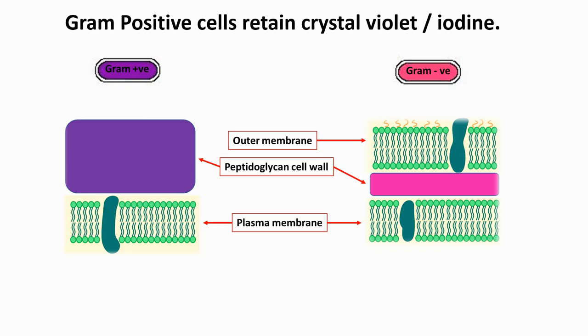The decolorized gram negative cells are counter-stained with carbol fuchsin. This is why gram positive organisms appear purple after staining, and gram negative appear pink.